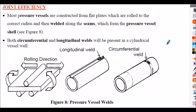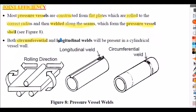Now I'm going to introduce some more notation and terminology and a few more formula derivations. Let's go through what's called joint efficiency. Most pressure vessels are constructed from flat plates which are rolled to the correct radius and then welded along the seams to form the pressure vessel shell. We have both circumferential and longitudinal welds in a cylindrical vessel — a longitudinal weld running along the length and a circumferential weld around the vessel.